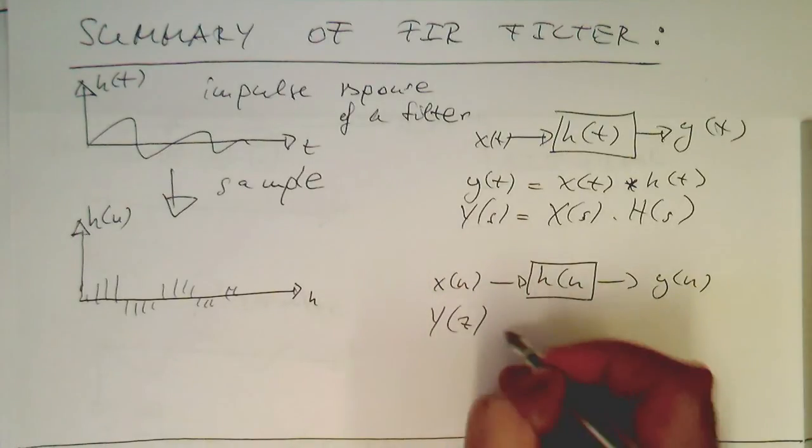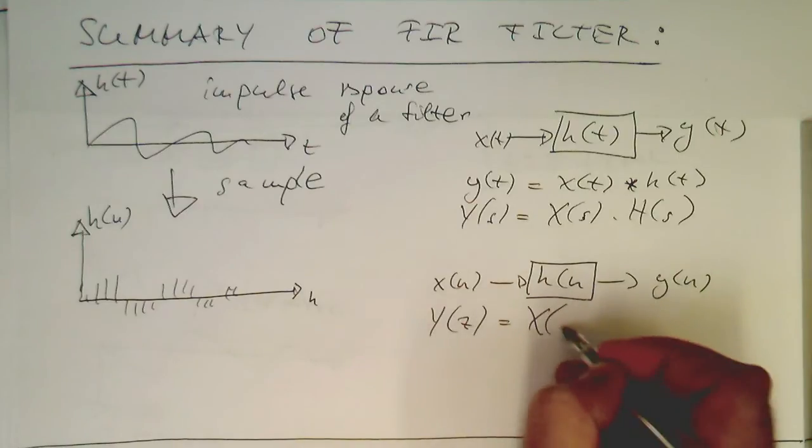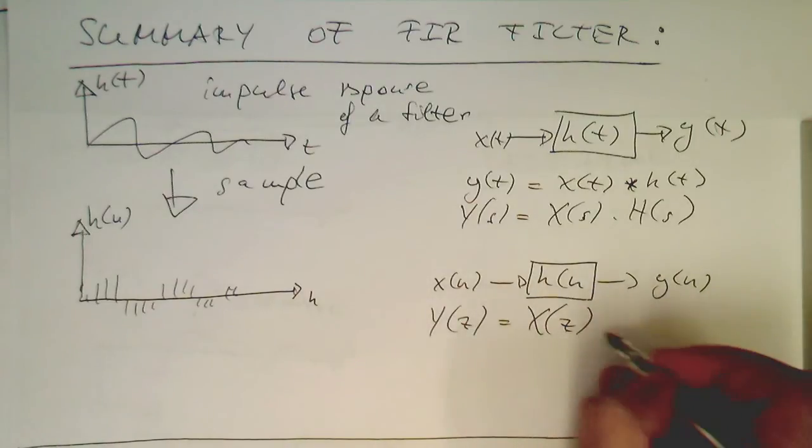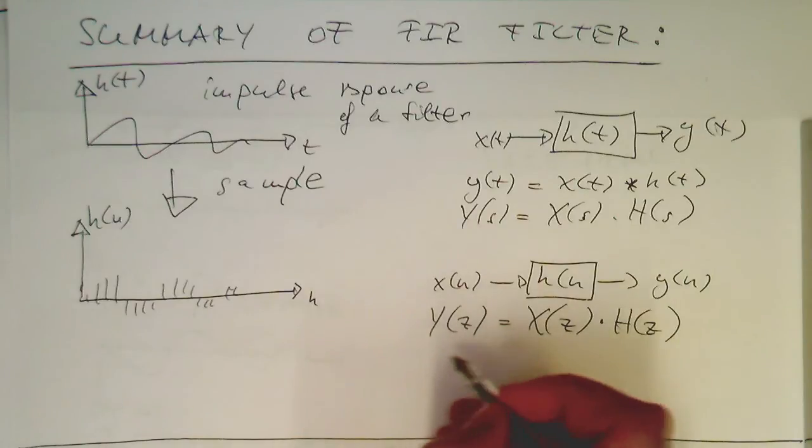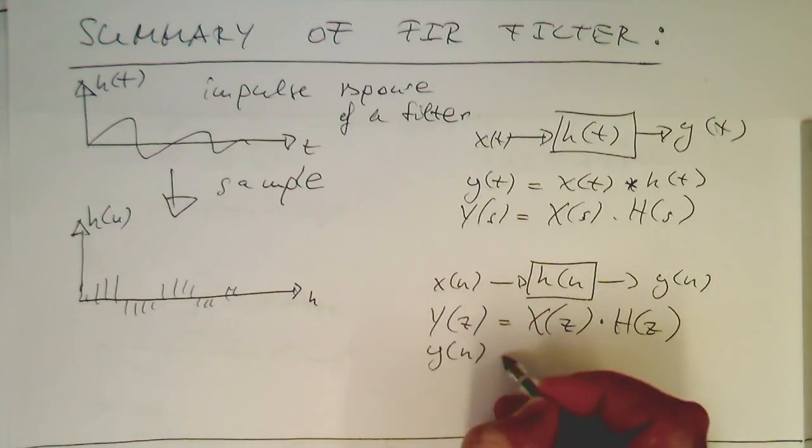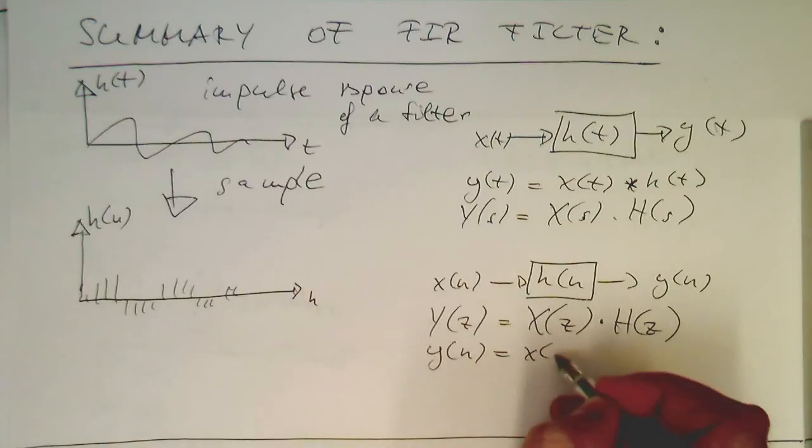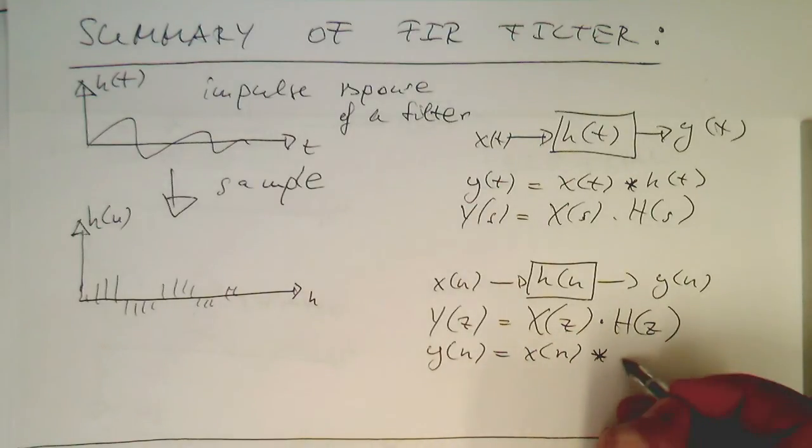we have Y equals X multiplied by H. And this corresponds to Y(n) equals X convolved with H(n).